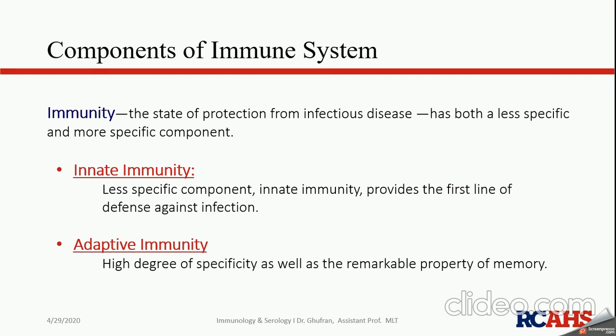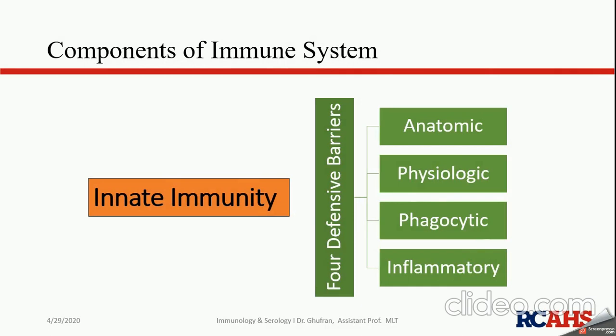Starting with innate immunity, it has four defensive barriers: the anatomic barrier, the physiologic barrier, the phagocytic barrier, and the inflammatory barrier. These barriers are listed in order — if the body fails to restrict the pathogen using one barrier, the next comes into play. We will talk about each barrier one by one.